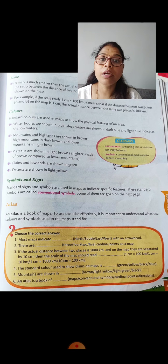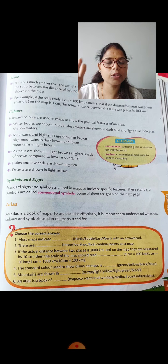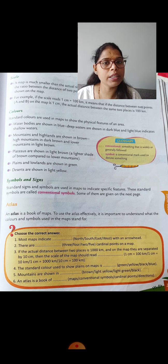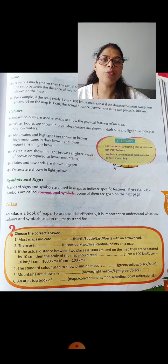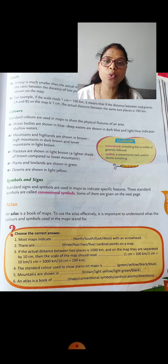Plateaus — small hills — are shown in a light brown, a lighter shade than lower mountains. Plains and lowlands are shown in green. Deserts are shown in light yellow. So when drawing a map of any area, these are the standard colors we use.